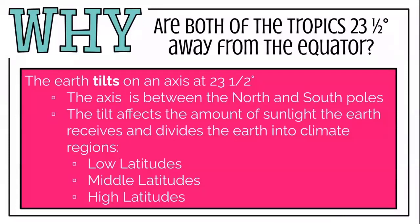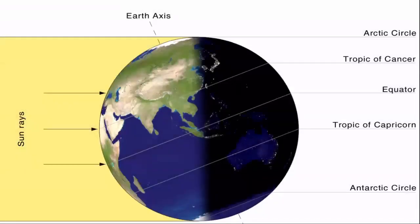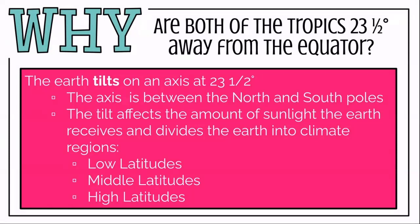The Earth is not straight up and down — it tilts on its axis at 23 and a half degrees, between the north and south poles. Because it's tilted on this axis, that affects the amount of sunlight the Earth receives and divides it into different climate regions: the low latitudes (the tropics), the middle latitudes, and the high latitudes (the polar regions). Low indicates low numbers, middle indicates middle numbers, and high indicates the high numbers.